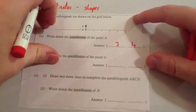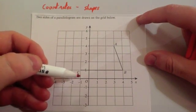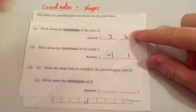What's the coordinate for C? So let's have a look at C. C is minus one across and one up. So it would be minus one and one.